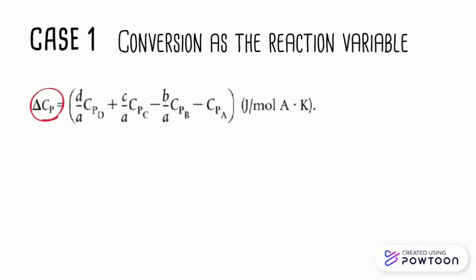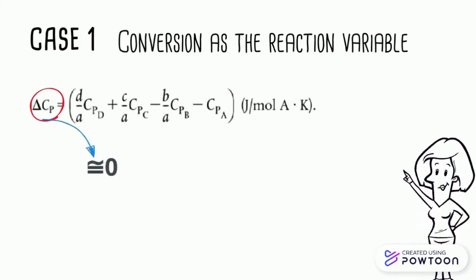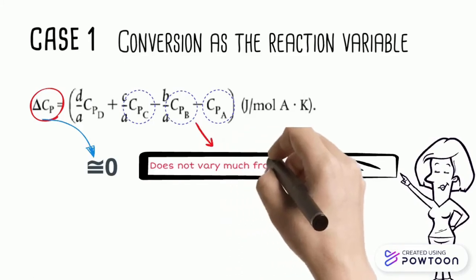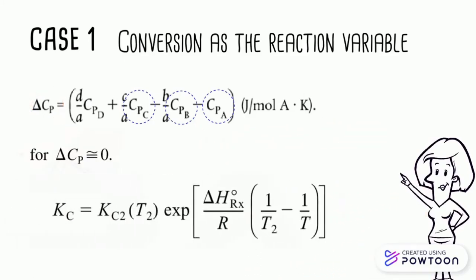Then, the delta Cp value is approximately zero. Why? Because the value of the mean heat capacity constant for species A, B, and C does not vary much from each other. Therefore, this equation is used to find the equilibrium constant for this reaction.